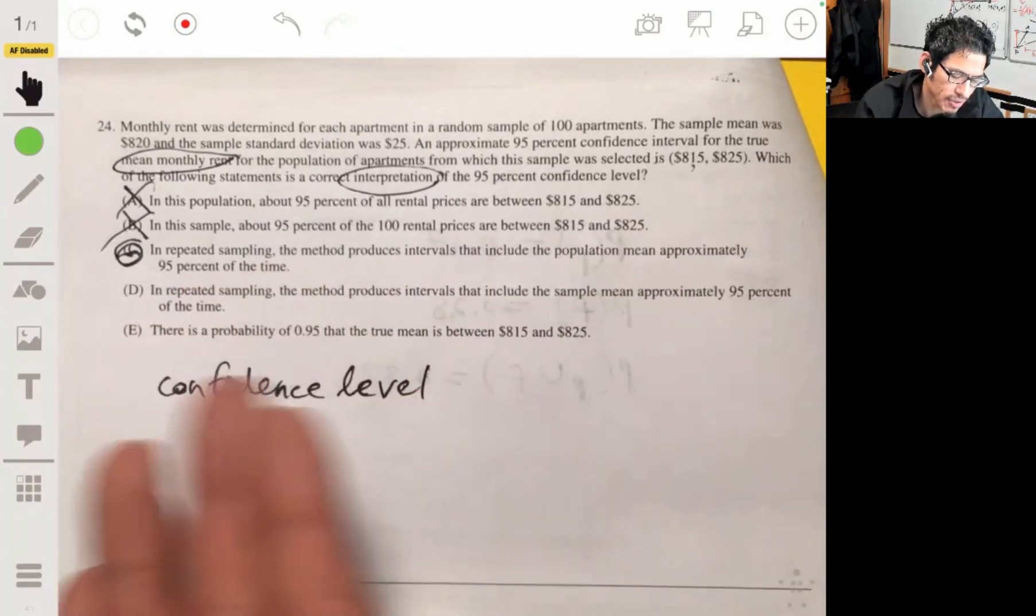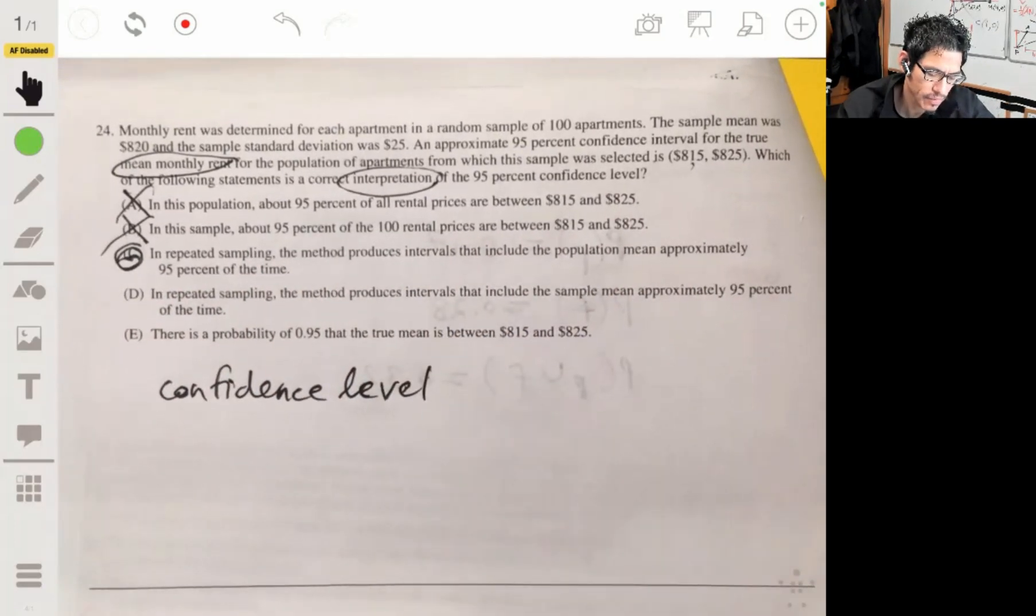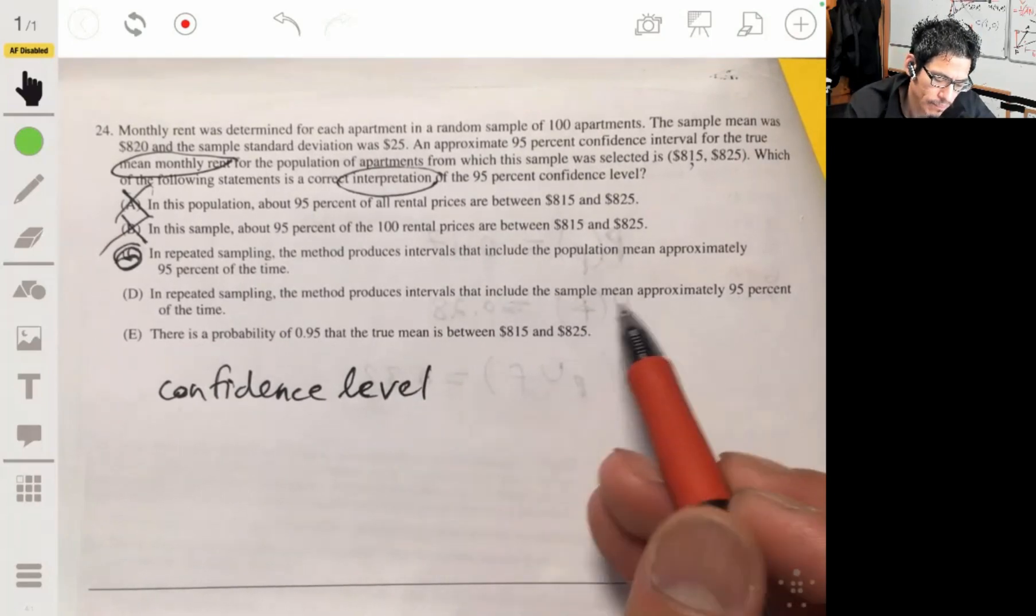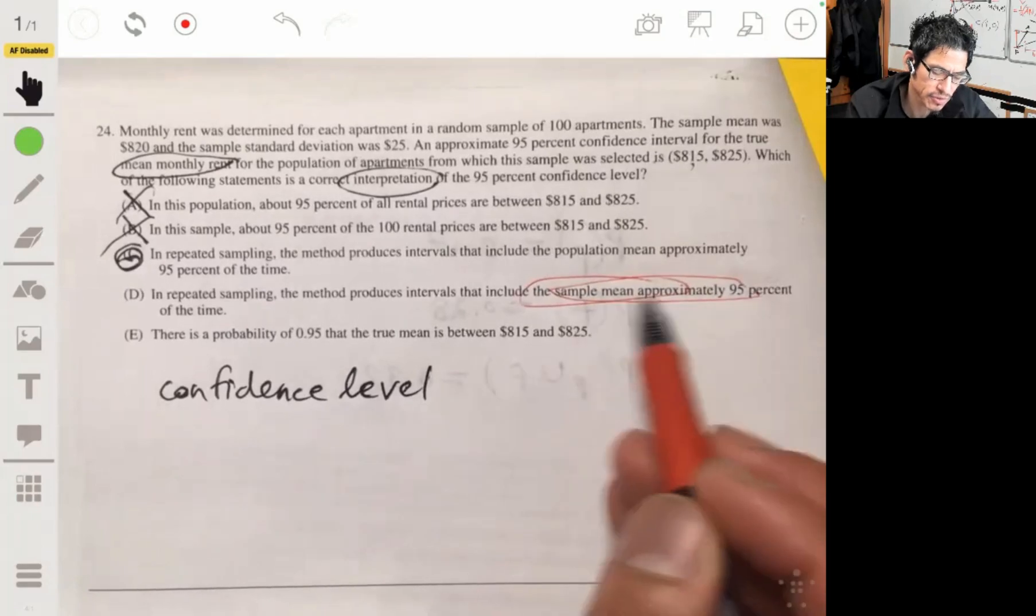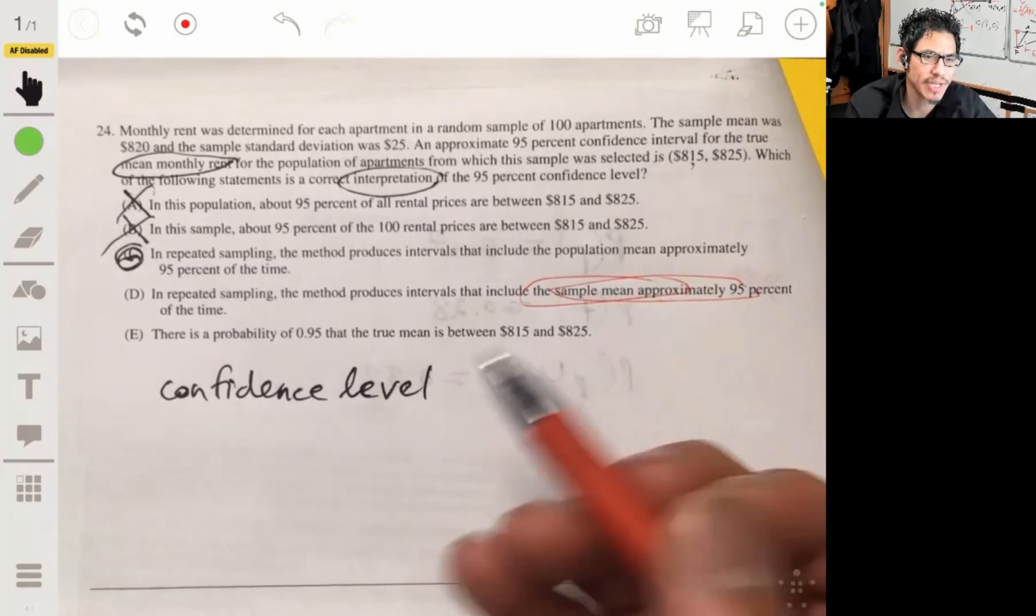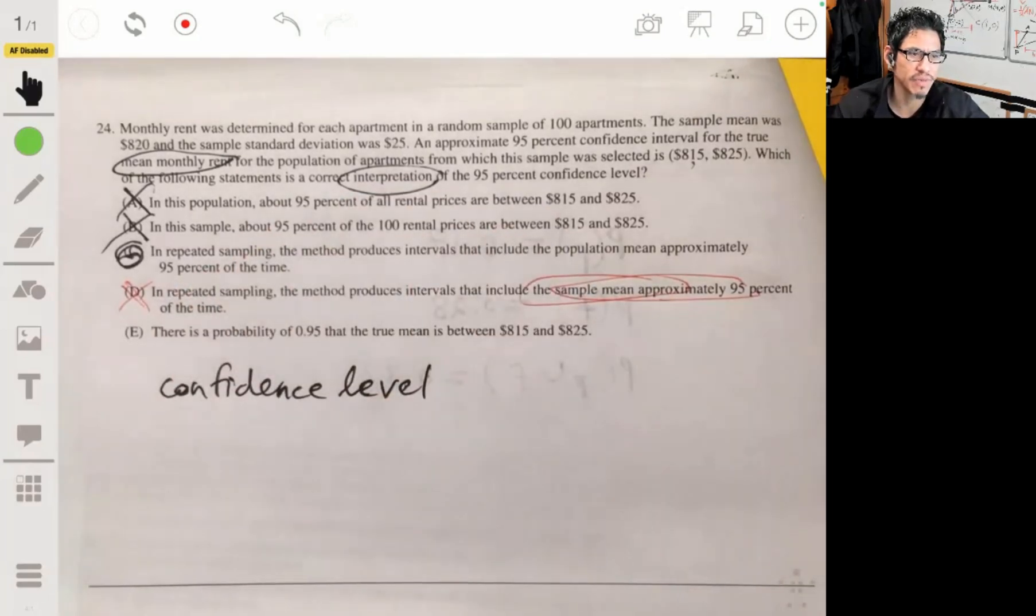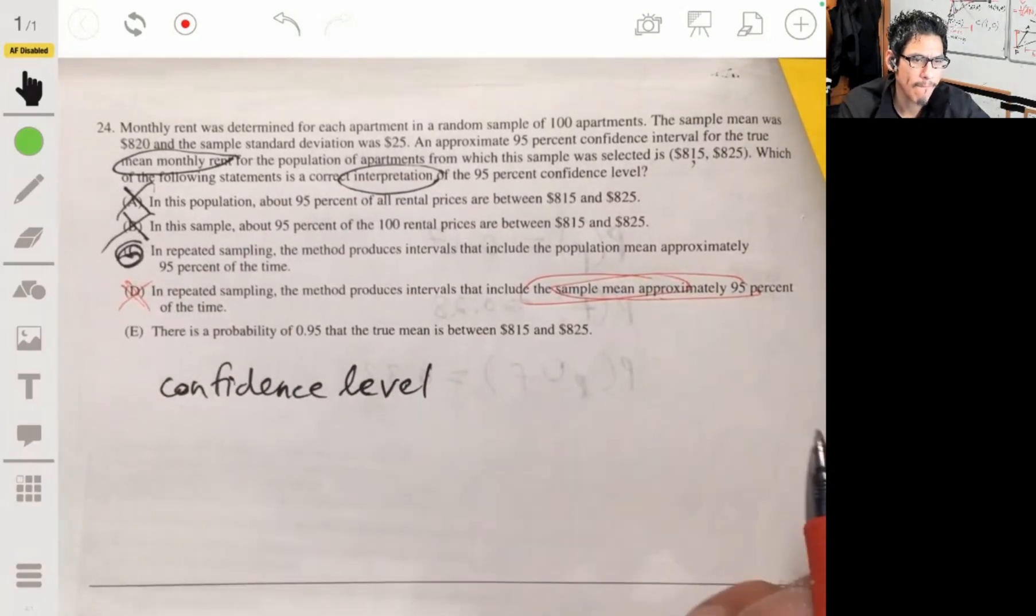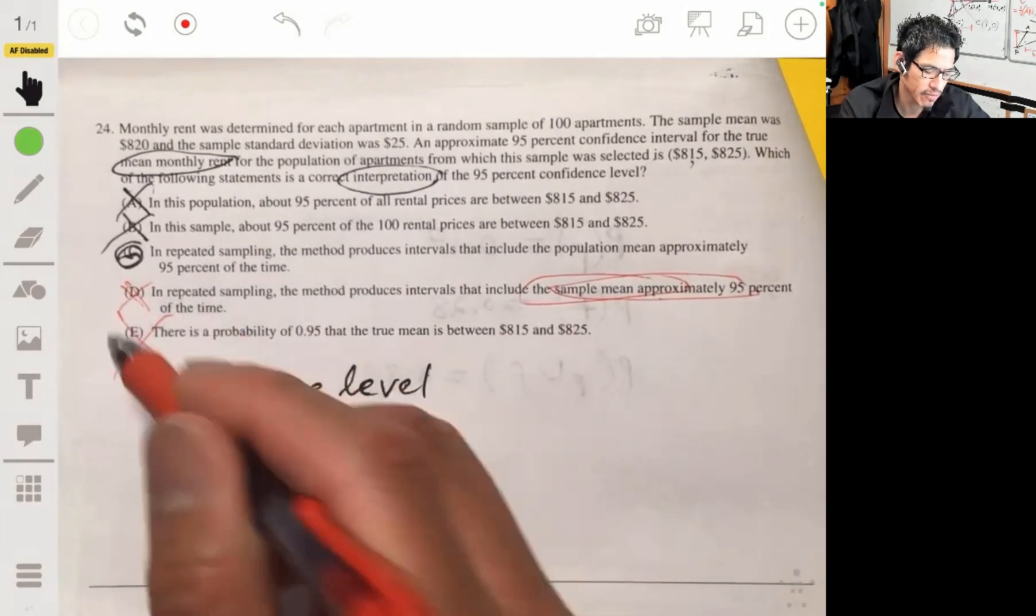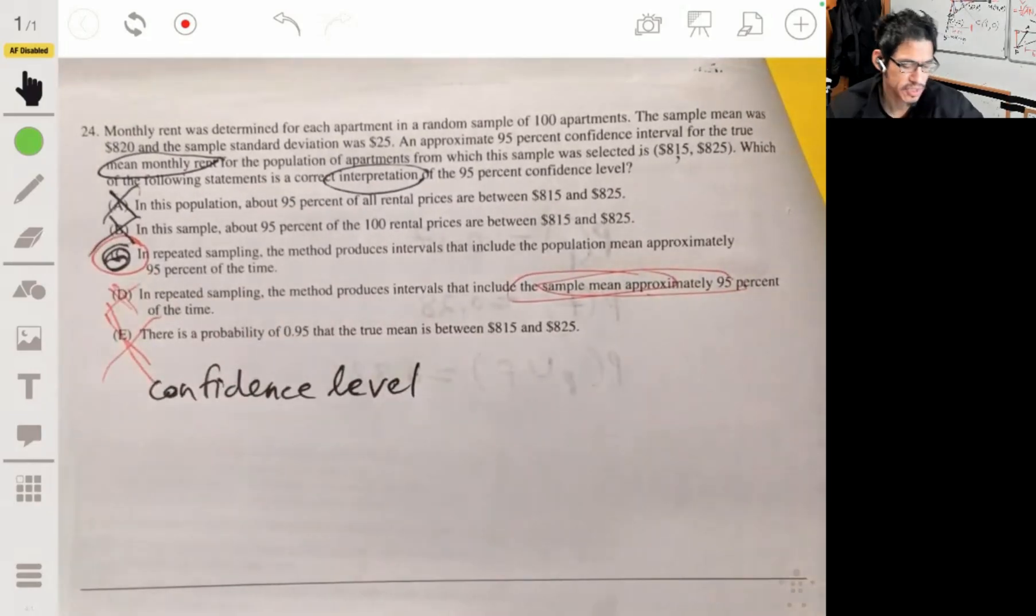Plus, you can just tell it's longer so it sounds correct. And again, D, we don't care. Of course, this is true, but we don't care about getting the sample mean, because we know what the sample mean is, because we have all the information about the sample. And E is way wrong, never pick E. So, C for sure.